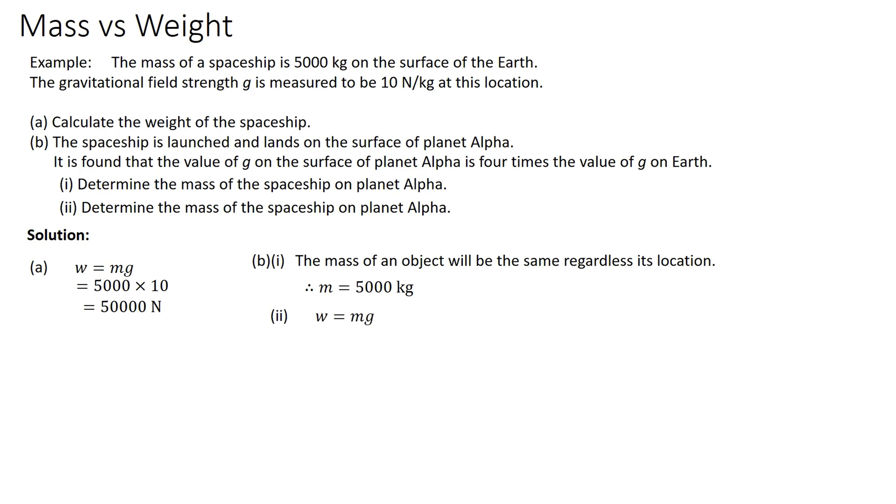For part (b)(ii), W equals mg. The new weight will be 5000 times 4 times 10 because the question mentioned that g for planet alpha is 4 times g for Earth. Therefore, you will get 200000 newtons, or you can represent it in standard form, 2 times 10 to the power of 5 newtons.